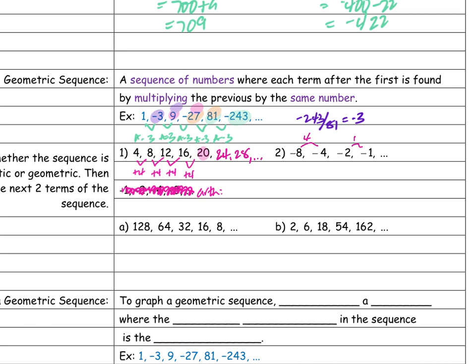It might be easier to look at it backwards first. How do I get from negative 1 to negative 2, negative 2 to negative 4, negative 4 to negative 8? Or in reverse: what do I do to negative 8 to get to negative 4, negative 4 to negative 2, negative 2 to negative 1? In the opposite direction, I'm multiplying by 2.